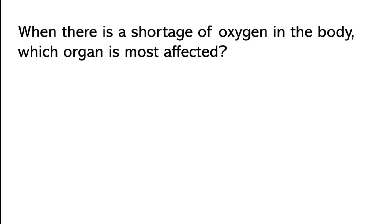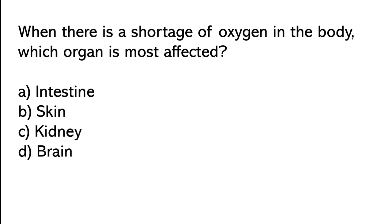When there is a shortage of oxygen in the body, which organ is most affected? Options: intestine, skin, kidney, brain. The correct answer is option D. When there is a shortage of oxygen in the body, the brain is the organ most affected.